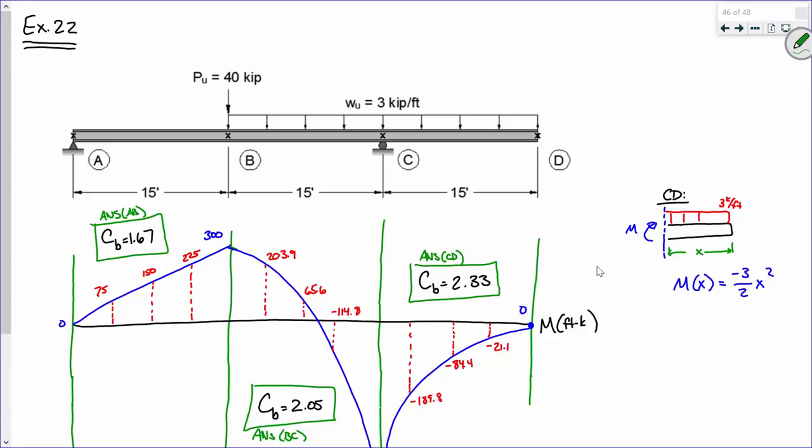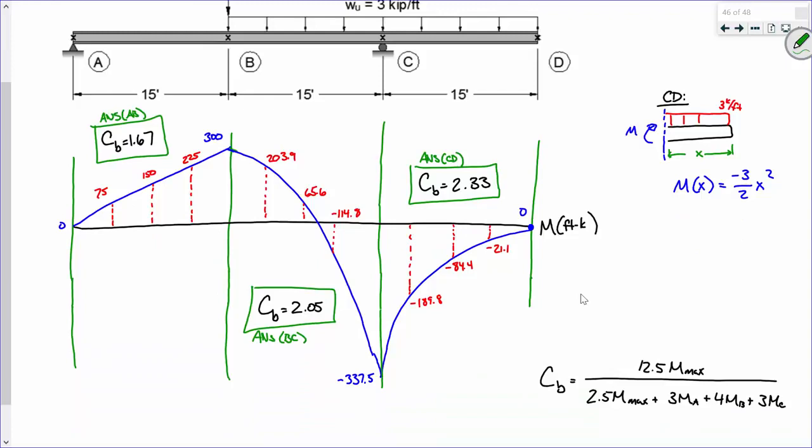When we left last time, when we left on Monday, we had computed all of the moments, but we hadn't quite gotten the C sub B values. I've gone in and inserted the final expressions, and they were just computed using the equation that you see down here. It's incredibly basic and incredibly straightforward, literally just plug and chug.